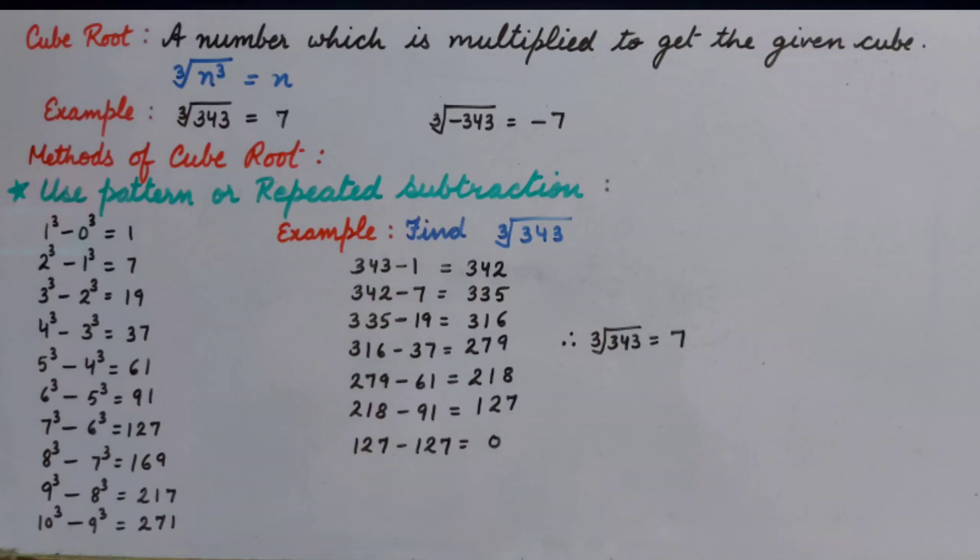And the pattern is 1 cube minus 0 cube that is 1, 2 cube minus 1 cube that is 7, 3 cube minus 2 cube that is 19, and so on. It means we have to take the difference of two consecutive cubes.